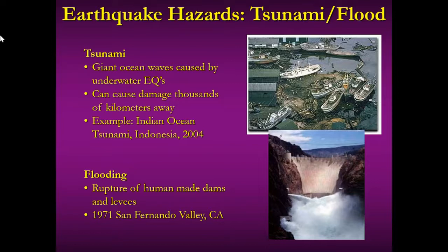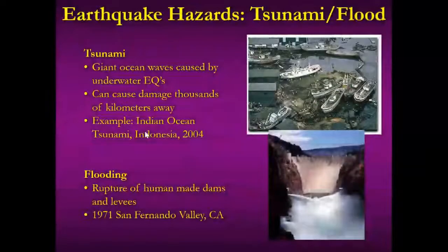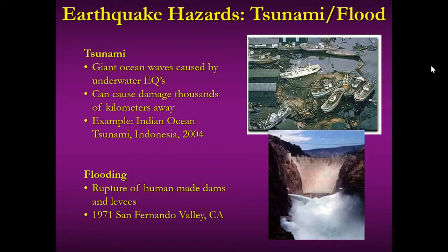In the 1971 San Fernando Valley earthquake, there was a large earthen dam with about 80,000 homes below it. The earthen dam was a big hill of dirt holding a reservoir. Shaking occurred so that only four feet of the original 30 feet above the water line remained. If any more shaking had occurred, it would have been a really big dam disaster.